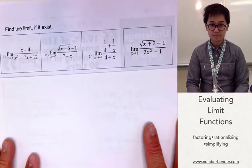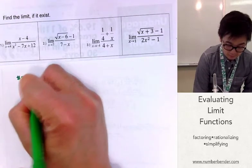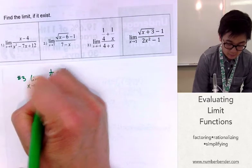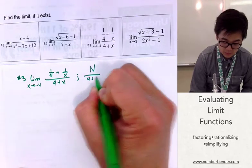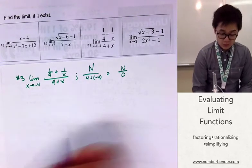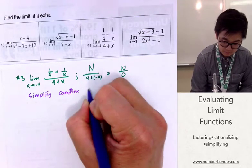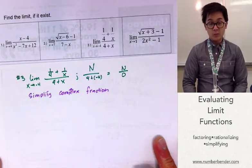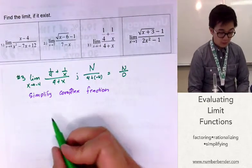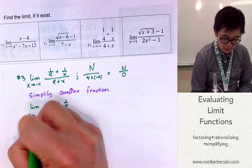Now for problem number 3, we have a complex fraction. We'll simplify it to evaluate the limit. We have the limit of 1 over 4 plus 1 over x, divided by 4 plus x, as x approaches negative 4. Checking by substitution: 4 plus negative 4 gives 0, so this is undefined at negative 4.